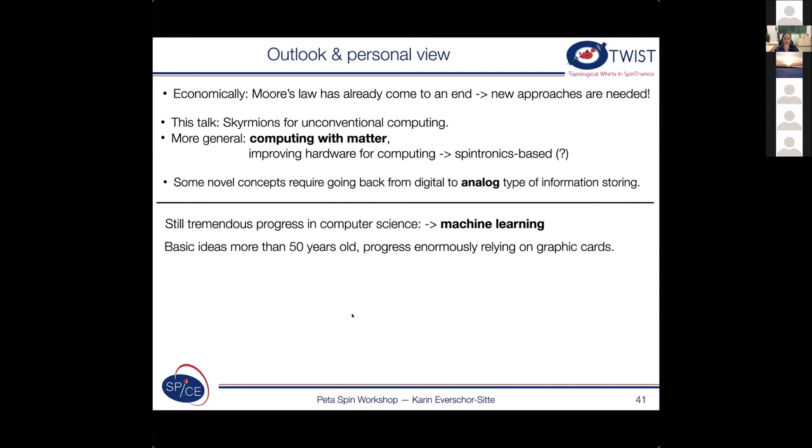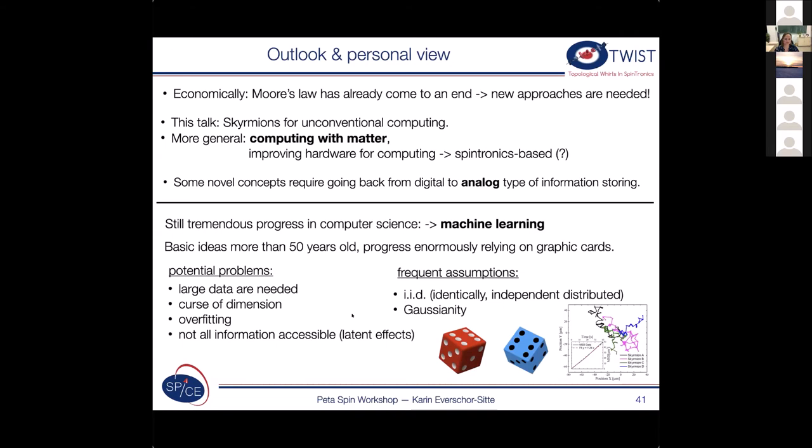One thing, the field is still facing several challenges. And one is that something that we tend to neglect is that a lot of machine learning algorithms frequently have some sort of assumptions. Gaussianity and IID are the most frequent ones. And also they face a lot of problems in the sense like most of the time actually need large data for training. Or you might have these overfitting problems. And one thing is that not always all information is accessible.